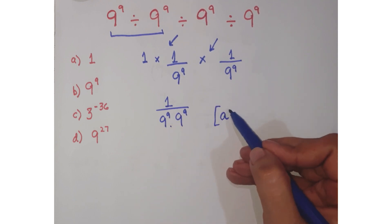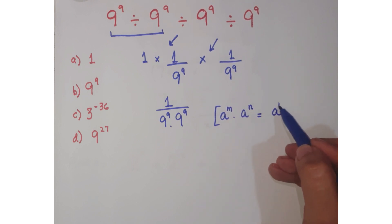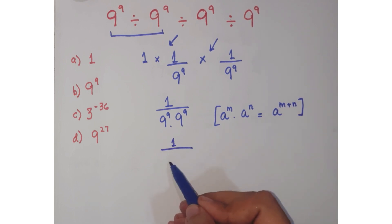As you know, the rule that a to the power m times a to the power n can be written as a to the power m plus n. So write it as 9 to the power 9 plus 9, and this equals 1 over 9 to the power 18.